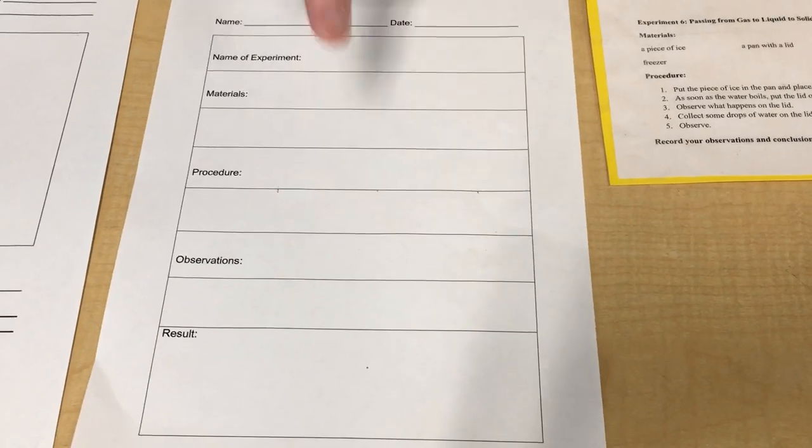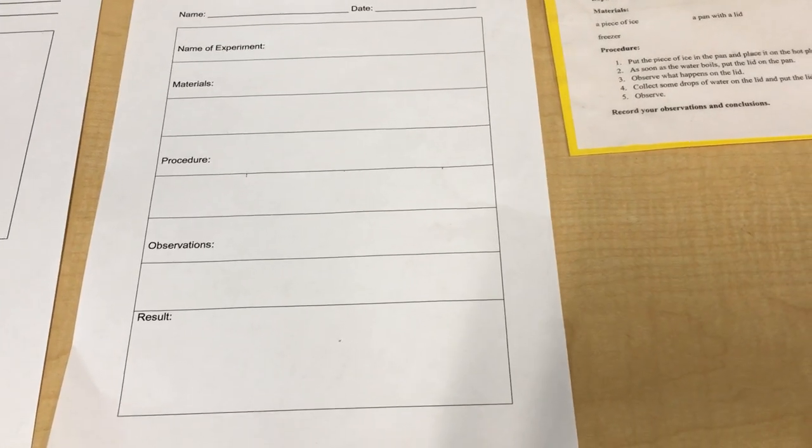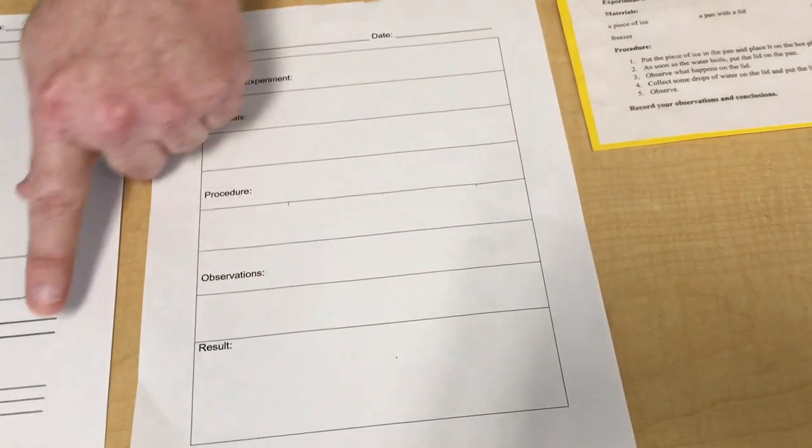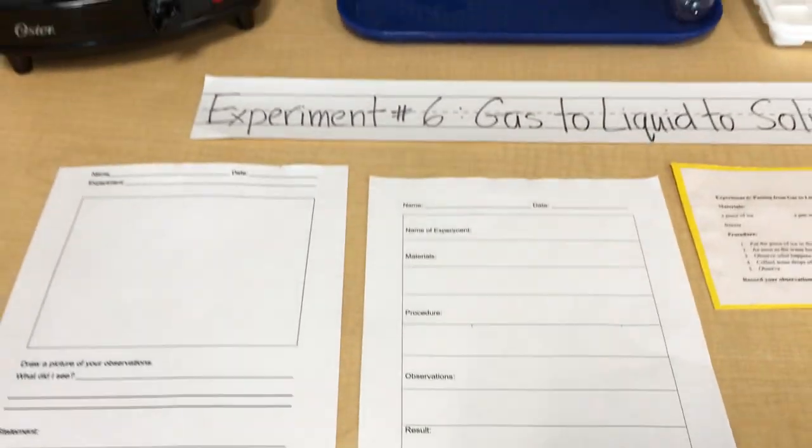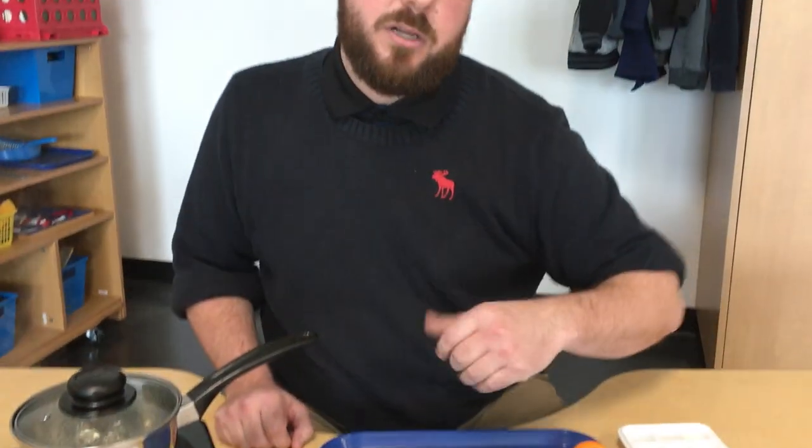Observation. What did I see? In your own words, what did you see happen? And the results. That's the same thing as the statement here. The result is what was proven in this experiment. What did we learn?